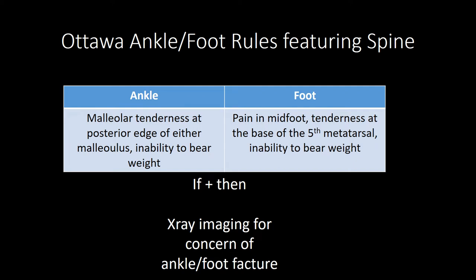Gastrocnemius rupture is associated with sudden changes in direction, like in tennis, and patients will have a negative Thompson test. For Ottawa ankle criteria, if the patient has malleolar tenderness at the posterior edge of either malleolus or inability to bear weight, they need imaging to assess for fracture. For Ottawa foot criteria, pain in the midfoot, tenderness at the base of the fifth metatarsal, or inability to bear weight will also require imaging.